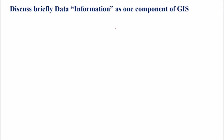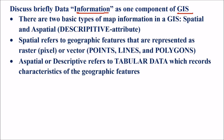Discuss briefly data information as one component of GIS. There are two basic types of map information in a GIS. First is spatial and then aspatial. Spatial data is the map data, the location data, the size data, and the relationship between spatial data. Aspatial means descriptive data — say a point representing a building.